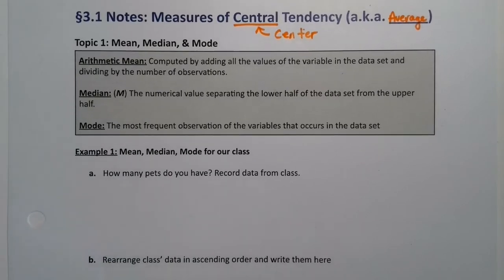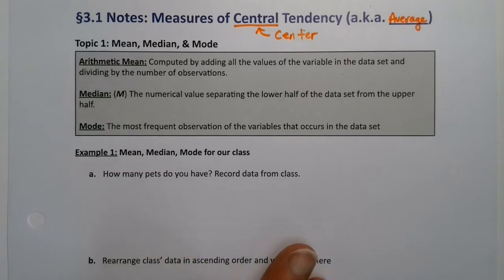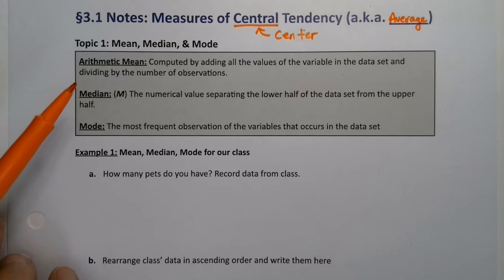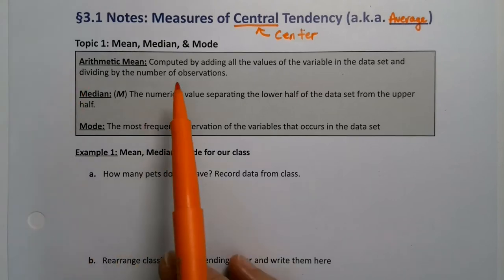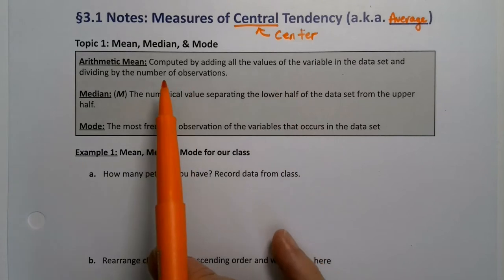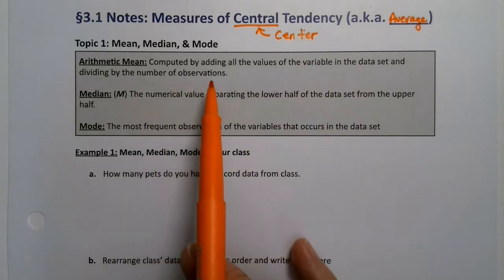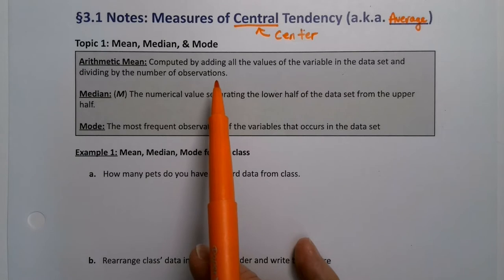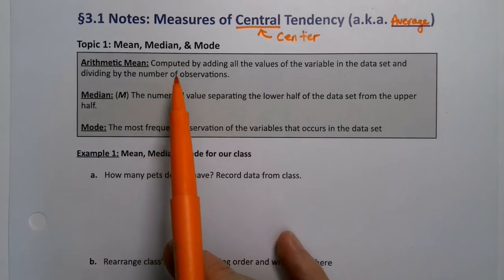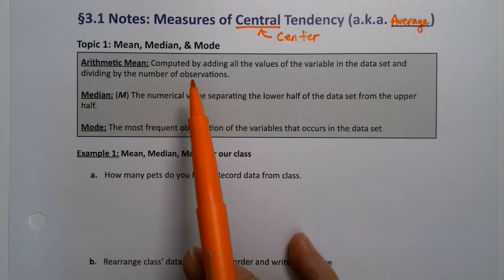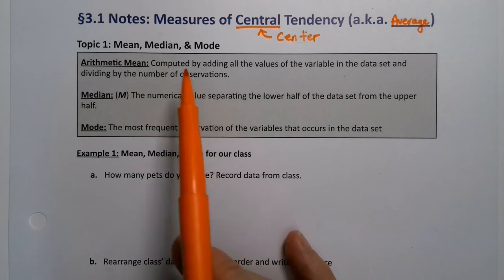The three measures we're going to learn are ones you've probably already seen: the mean, the median, and the mode. We've talked about the mean in some earlier sections. The mean is computed by adding up all the values of the variable in the data set and dividing by the number of observations. Most people think of this when they say 'average,' but it's actually only one type of average — there are many.